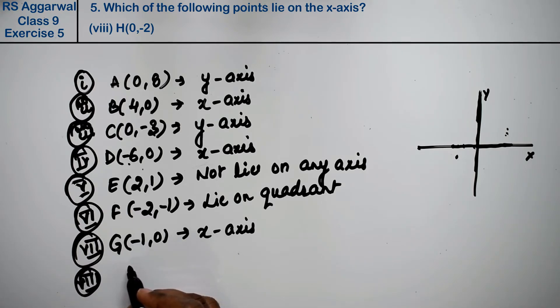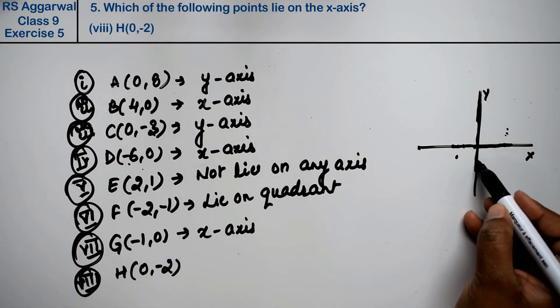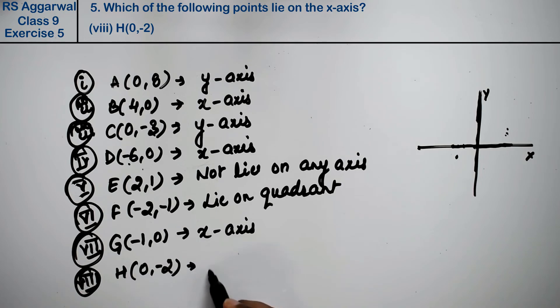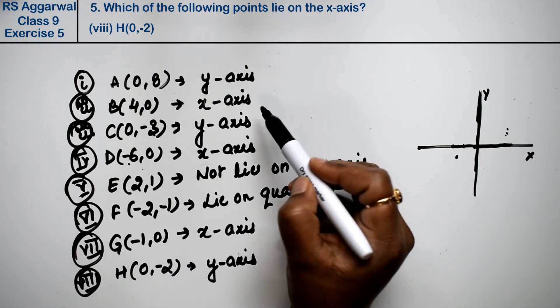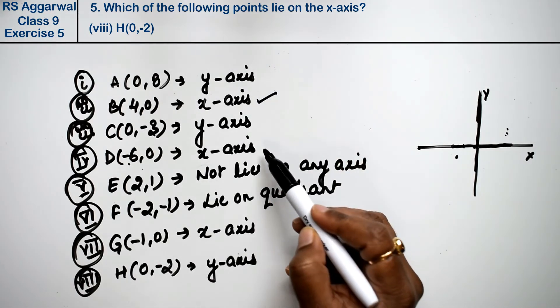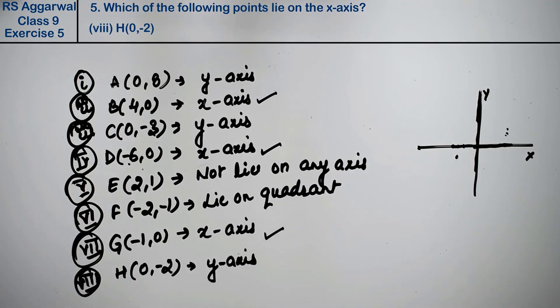Last part is H(0,-2). x is 0 and y is -2. That means this will be placed on the y-axis. So who are we going to put on the x-axis? B point, D point, and G point is the answer.